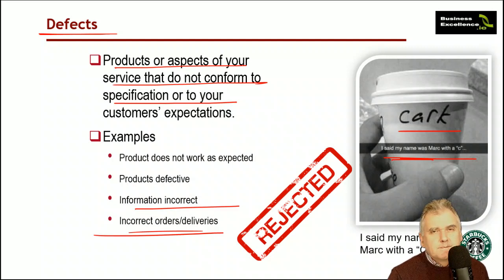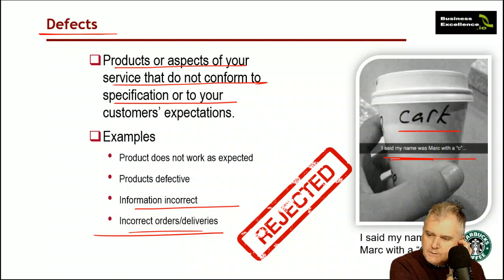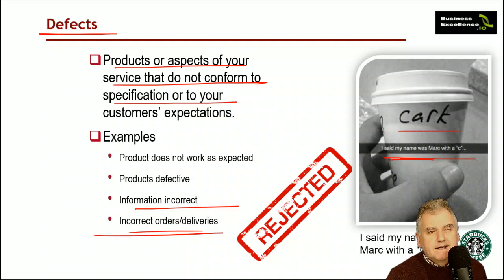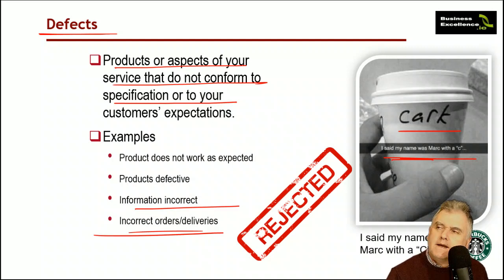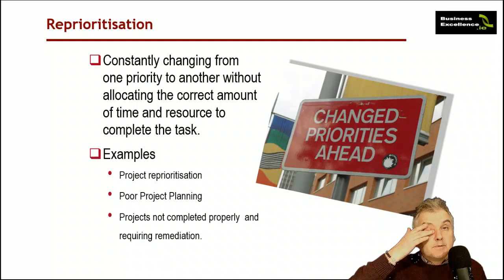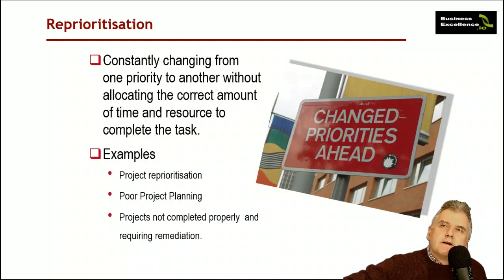McDonald's has moved to self-ordering, but you're probably more likely to make an error doing it yourself and it doesn't necessarily make it any quicker. So that's what a defect is. Beyond the TIM WOOD acronym, there are other types of waste — the next one is reprioritization.